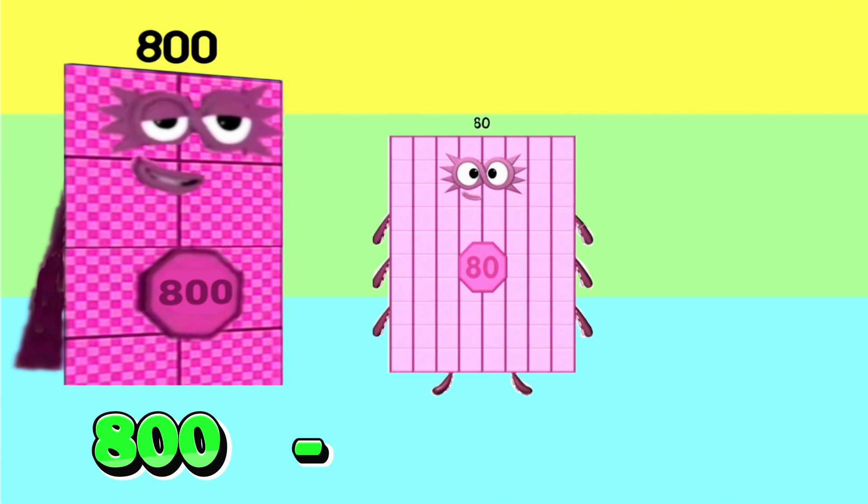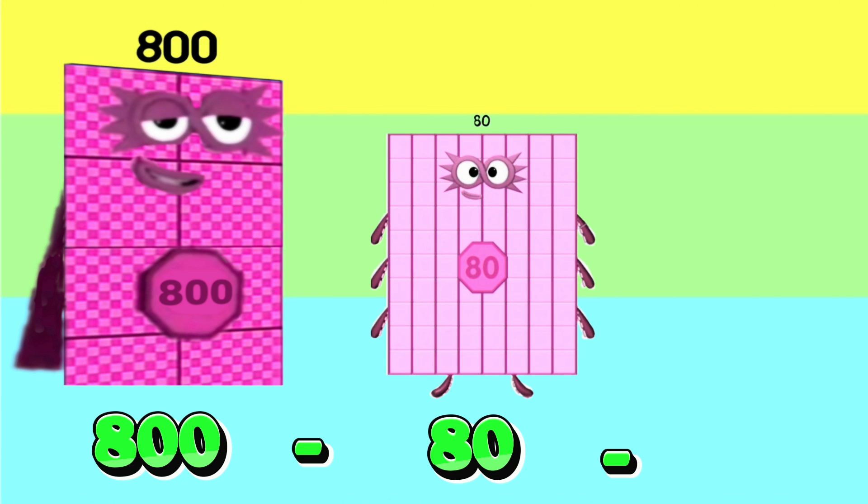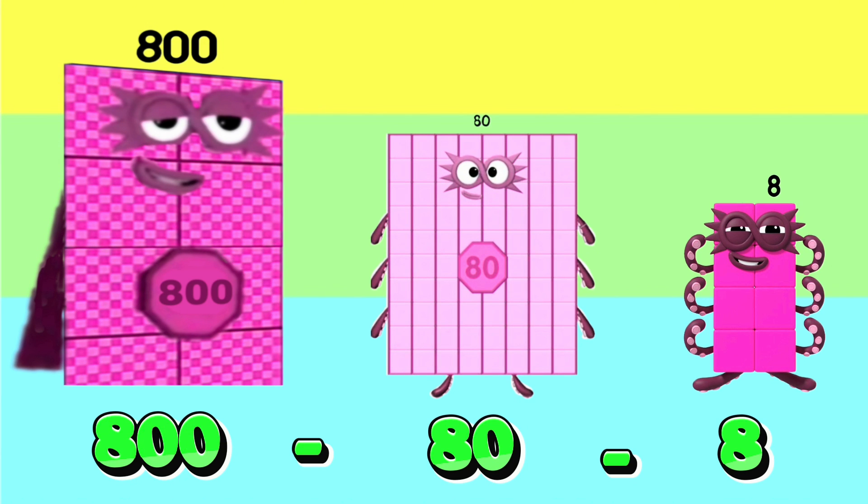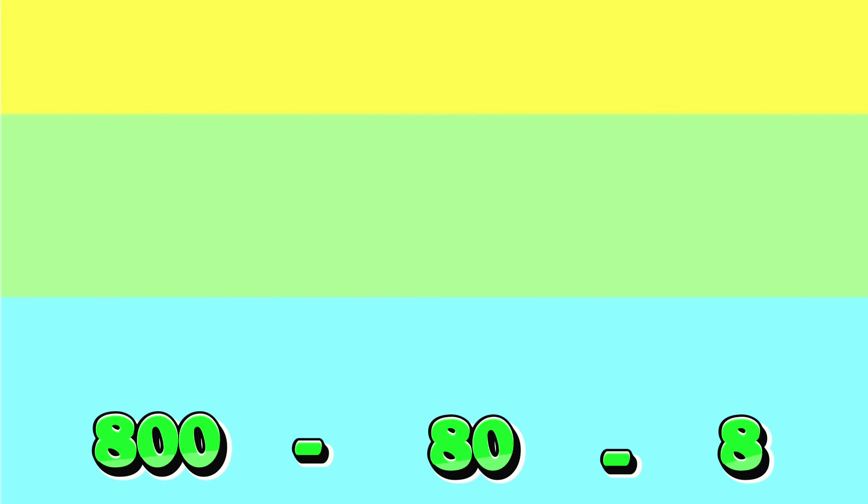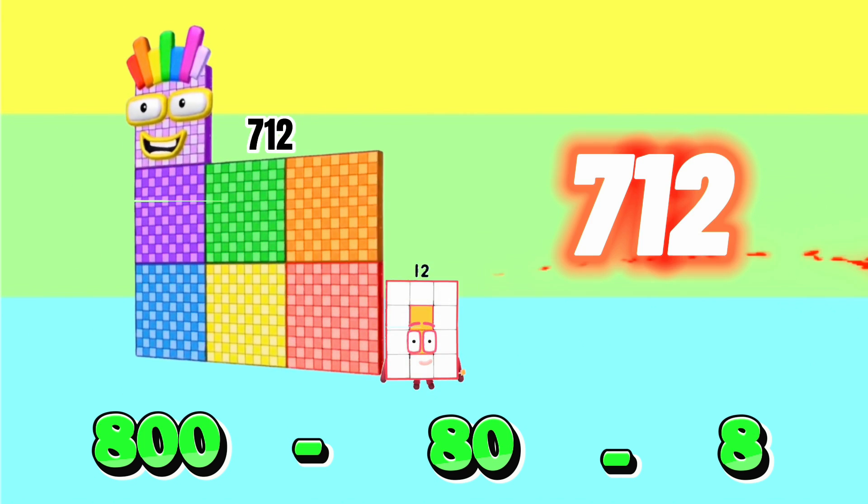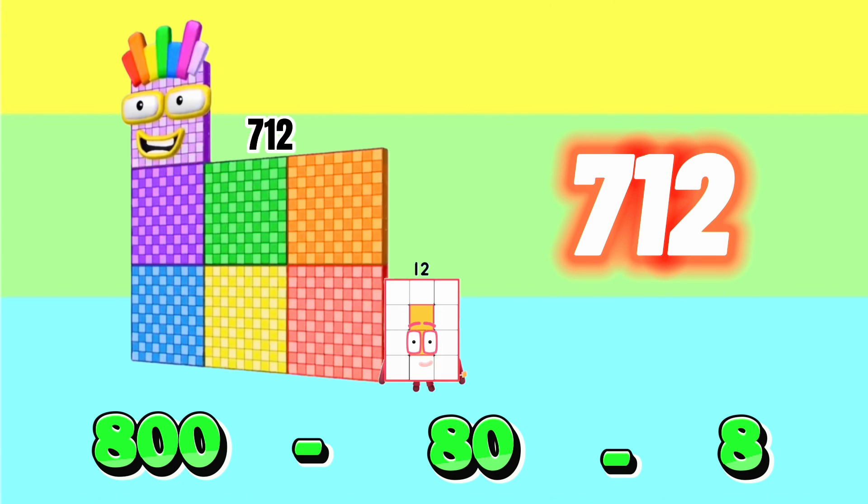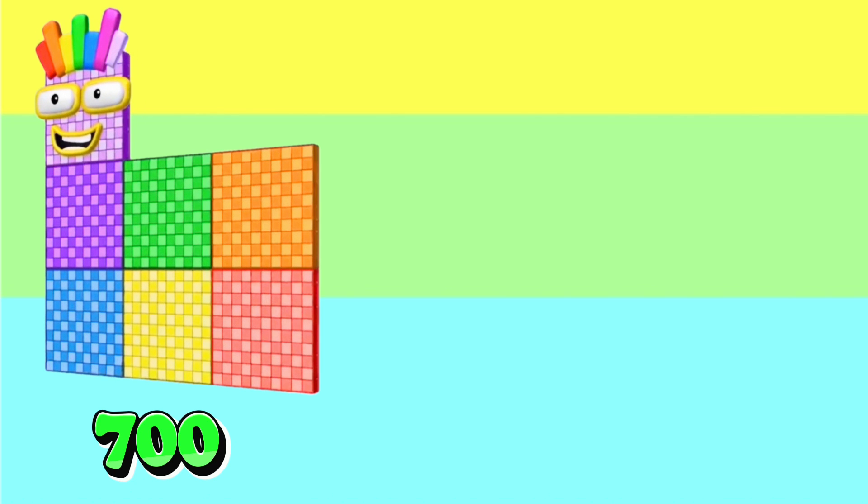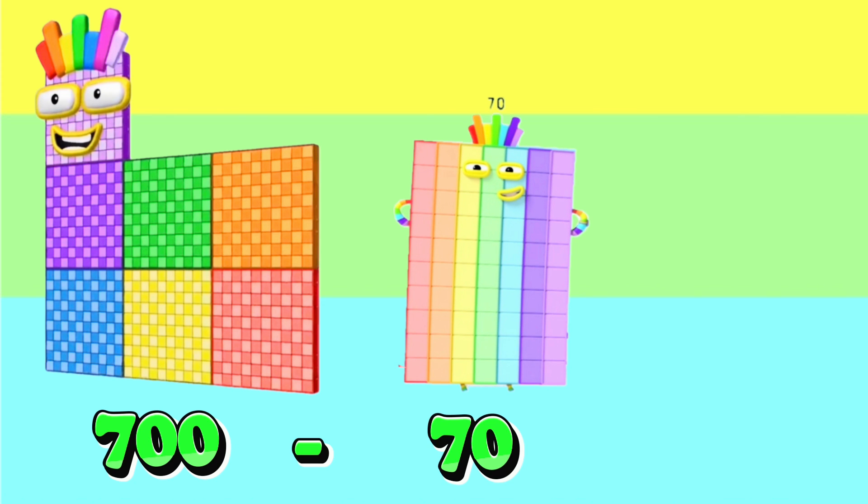800 minus 80 minus 8 is equals to 712. 700 minus 70 minus 7 is equals to?